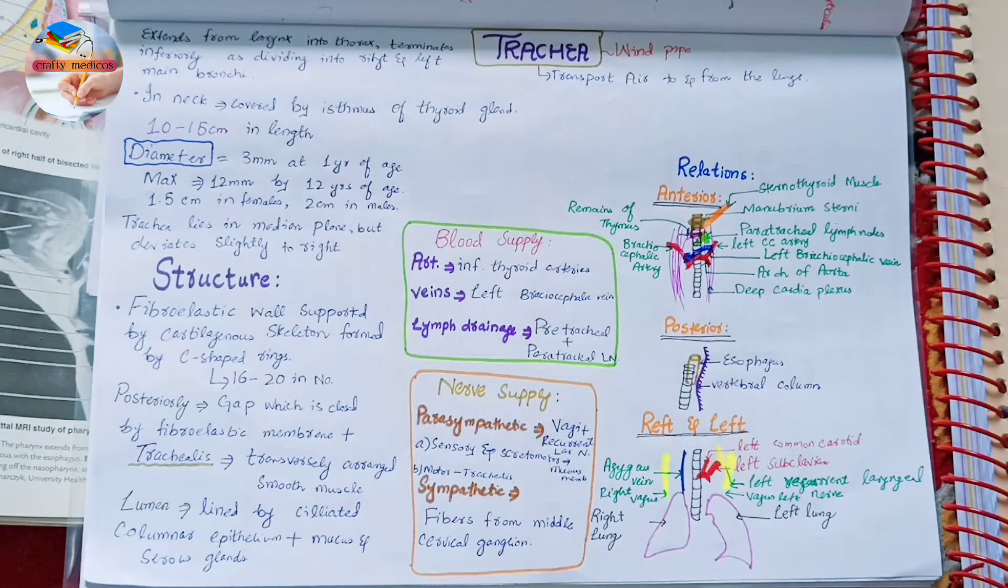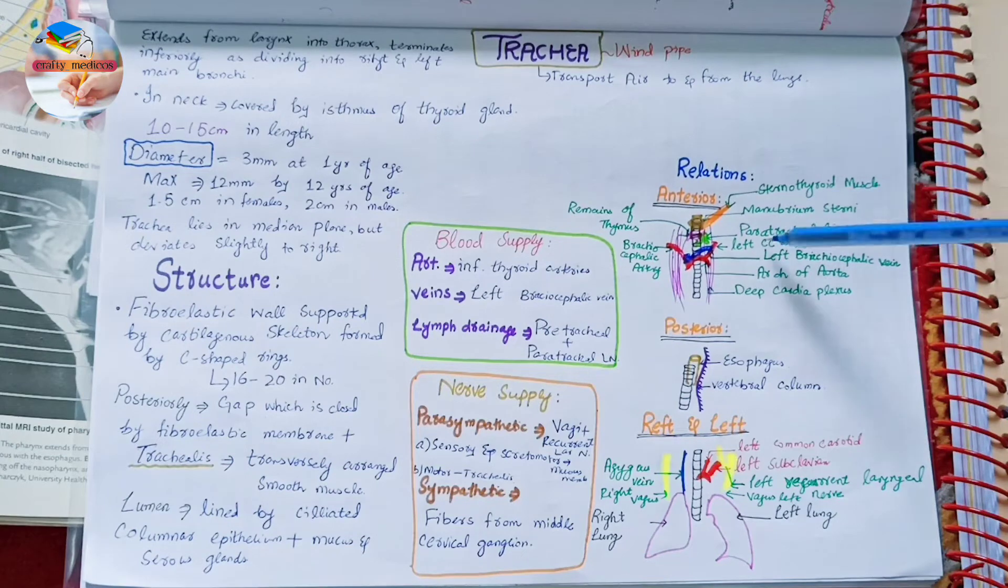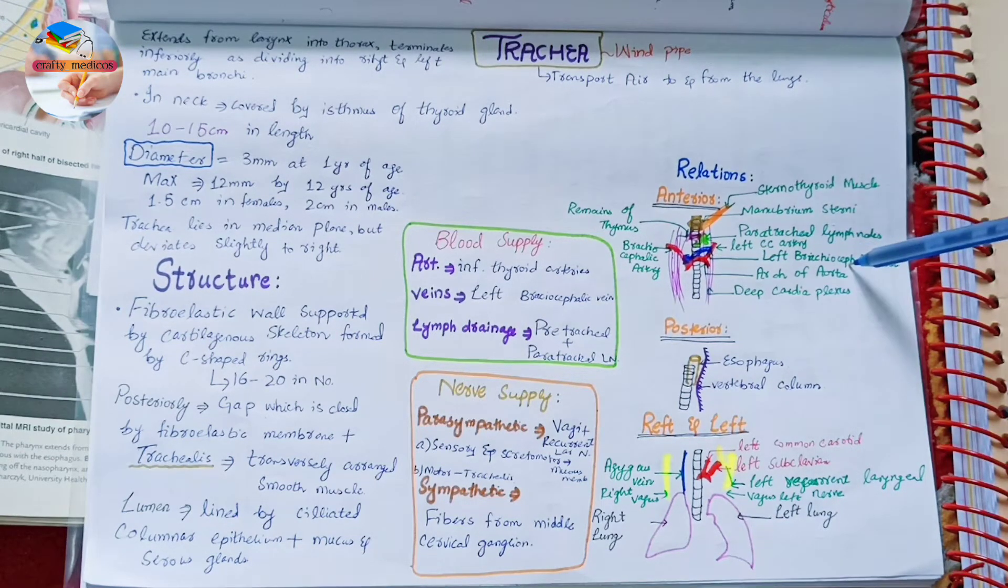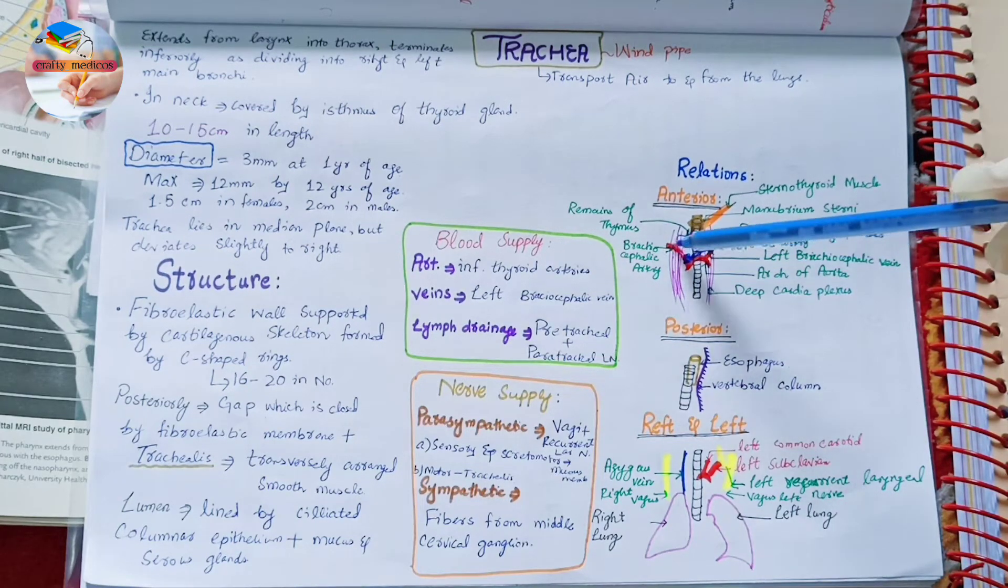Let's see the relations of trachea. Anteriorly it's related to the sternothyroid muscle, manubrium sterni, paratracheal lymph nodes, left common carotid artery, left brachiocephalic artery, arch of the aorta, deep cardiac plexus, brachiocephalic artery, and remains of the thymus.